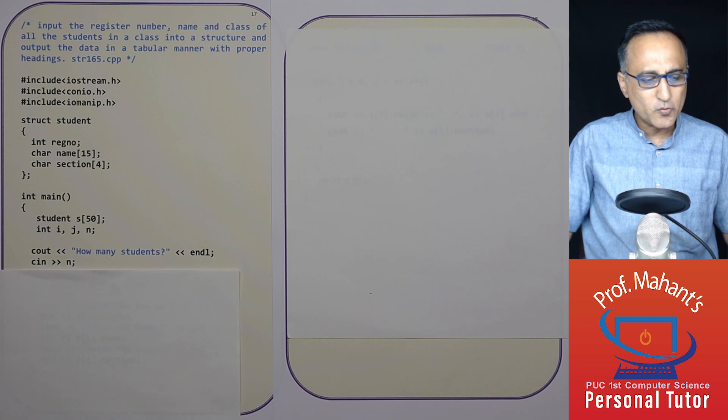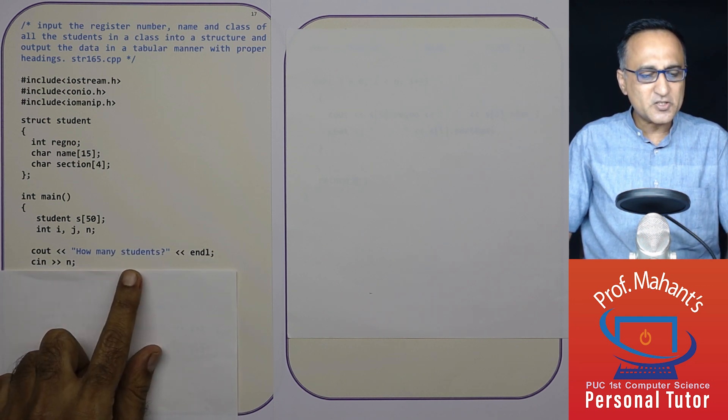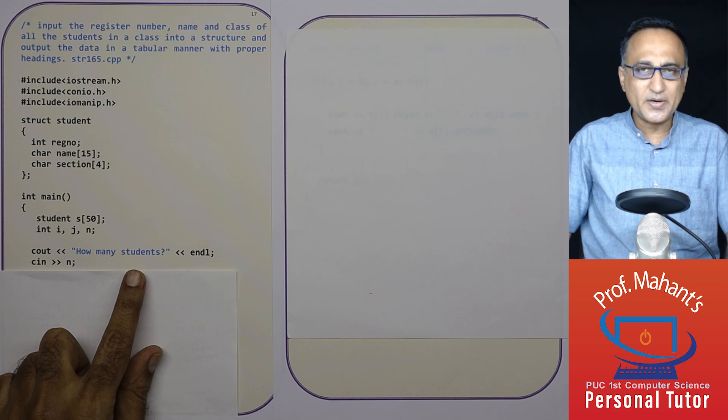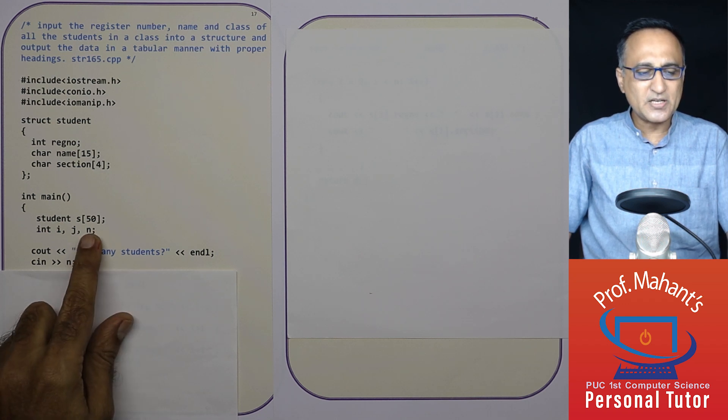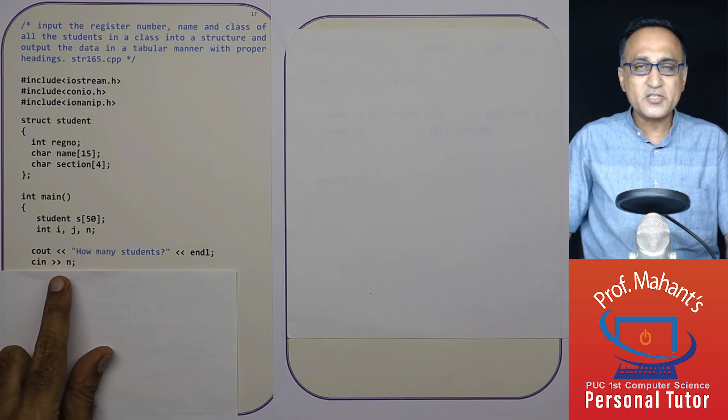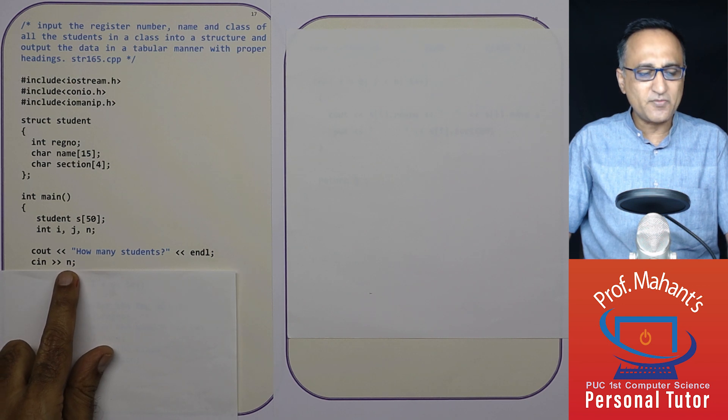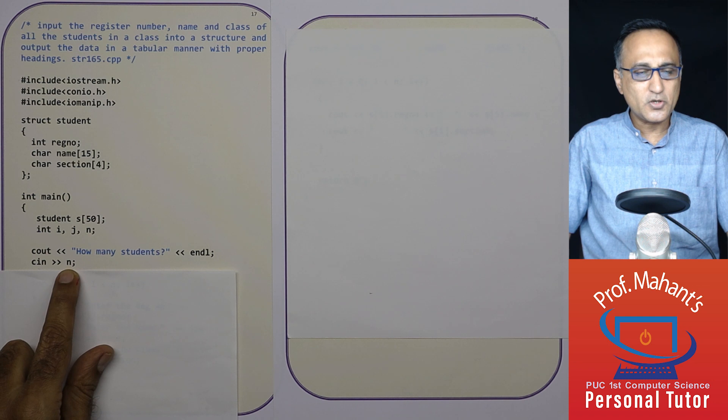So what I'm going to do is first I'm going to ask the user how many students data he or she wishes to enter. Although I have a capacity for 50, I may be only storing the data of 10 students. So n will store or n will hold how many students you're going to record or capture the data of.